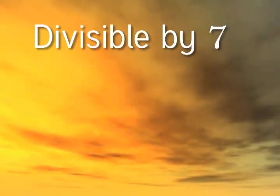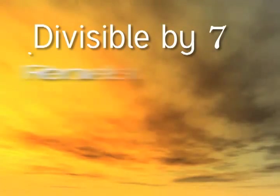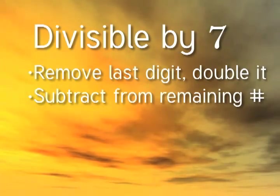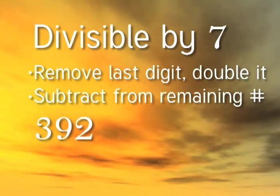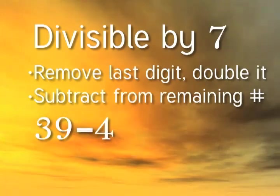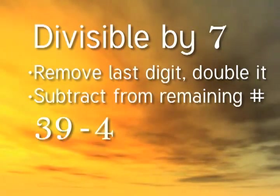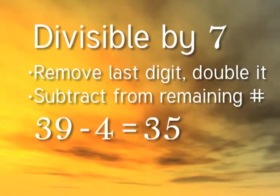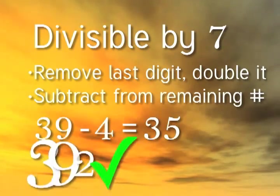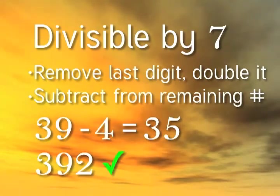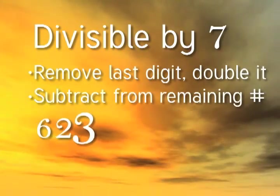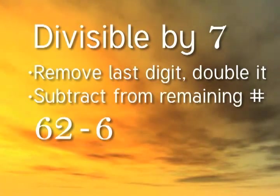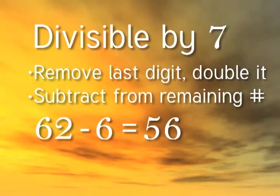Here's the test for 7. Take a number, remove the last digit and double it, and then subtract that from the remaining number. For example, 392. Take off the 2 and double it, subtract it from the remaining number. 35 is divisible by 7, so this number passes the test for divisibility by 7. Let's try another one. 623. Remove the 3 and double it, subtract it from 62, and you end up with 56. 56 is divisible by 7, so 623 is divisible by 7.